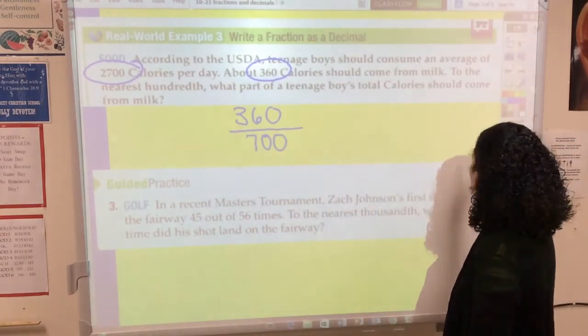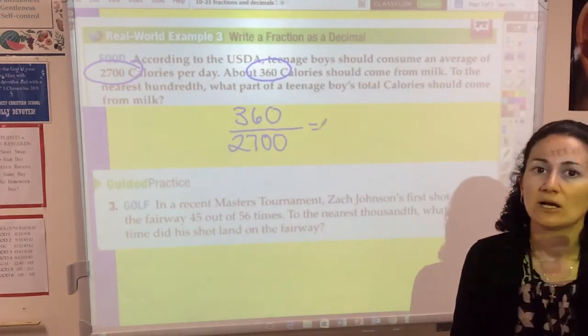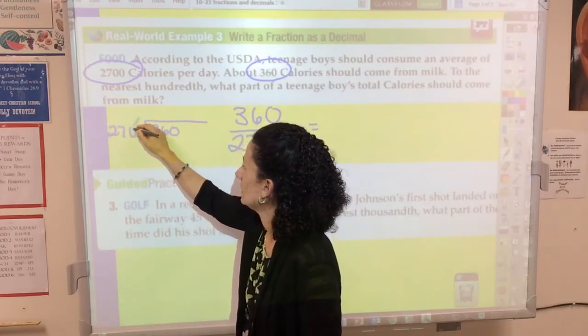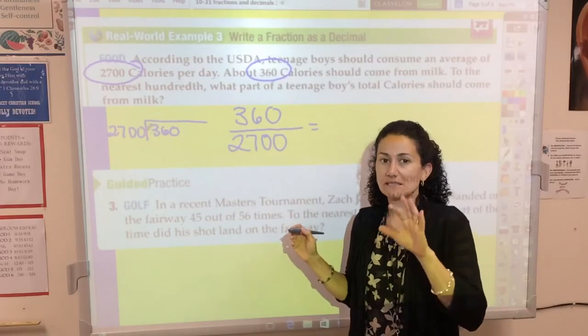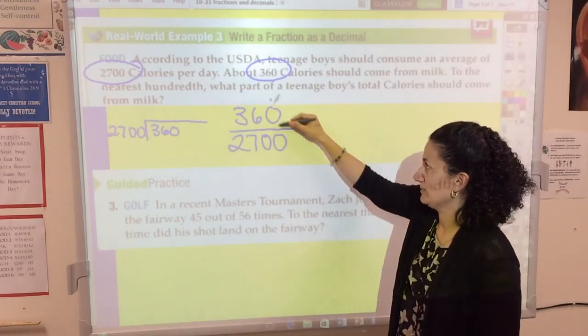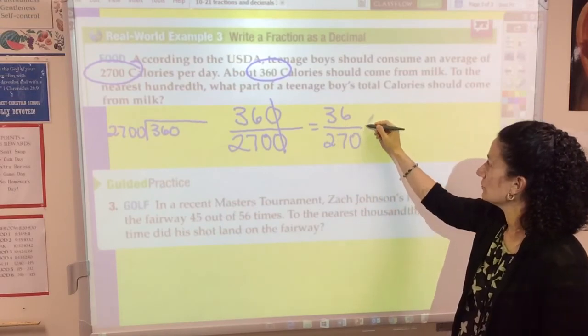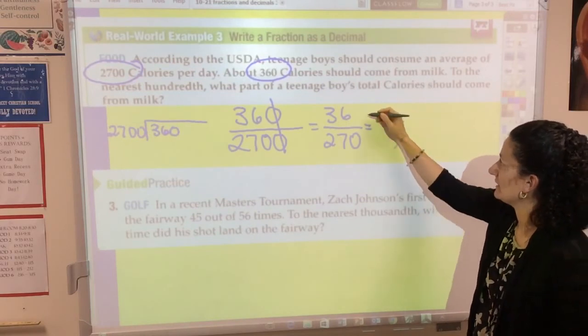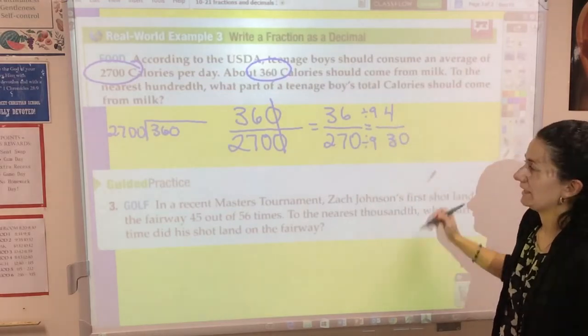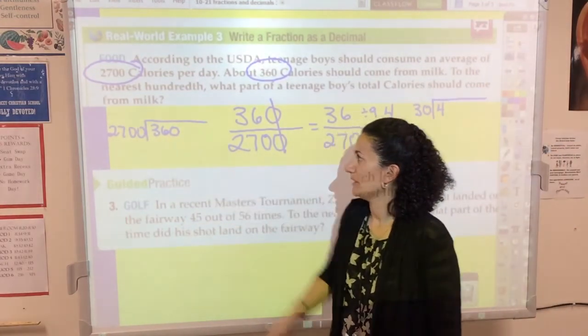So 360 from milk, 2,700 for the whole day. If we want to figure out what part this is, we could write it as a fraction in simplest form or as a decimal. One strategy I can use here is instead of having to divide 360 by 2,700, I can simplify this fraction. Simplifying a fraction definitely makes the problem simpler because then we'll have smaller numbers to work with. First I can divide by 100, cross off those zeros. Then I would have 36 over 270. Do you see a common factor? Yes, nine. We can divide by nine. 36 divided by 9 would give me 4, and 270 divided by 9 would give me 30. I just made the problem a little easier for myself.